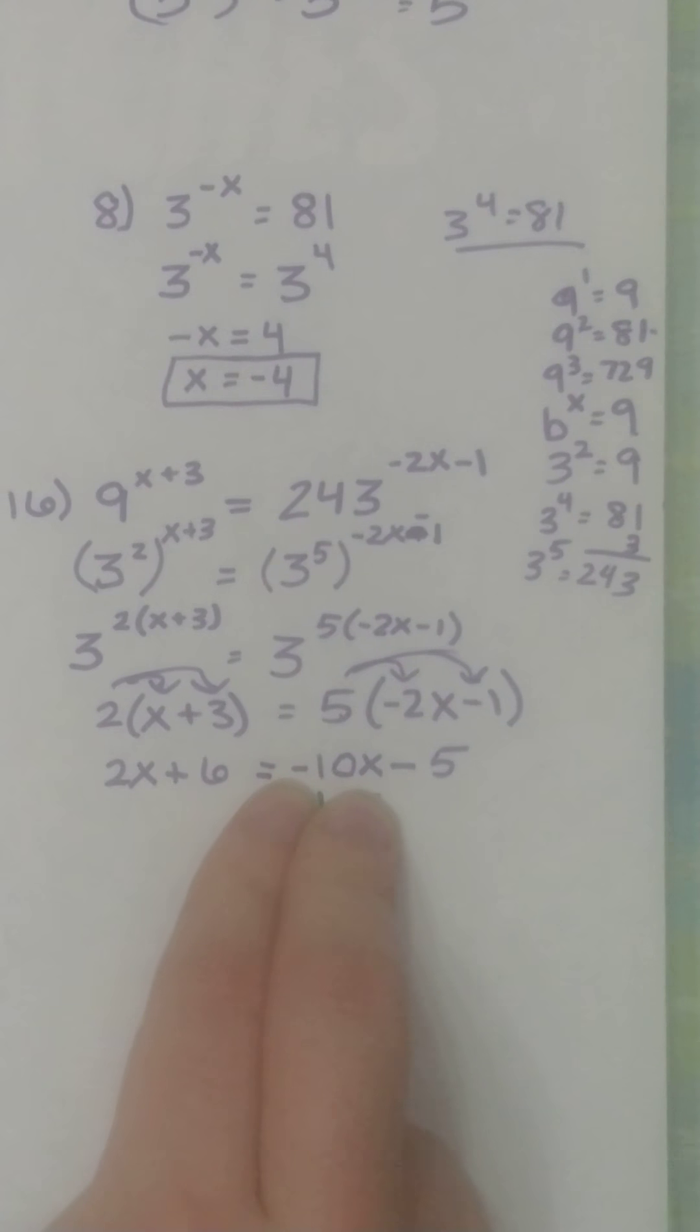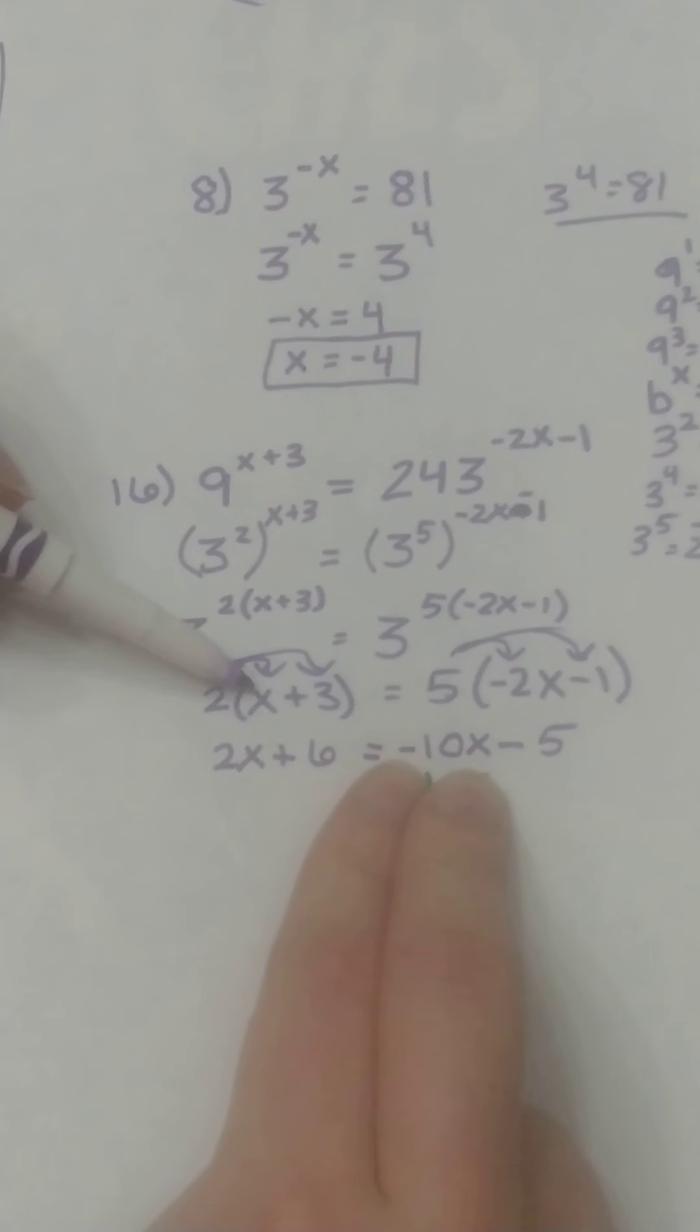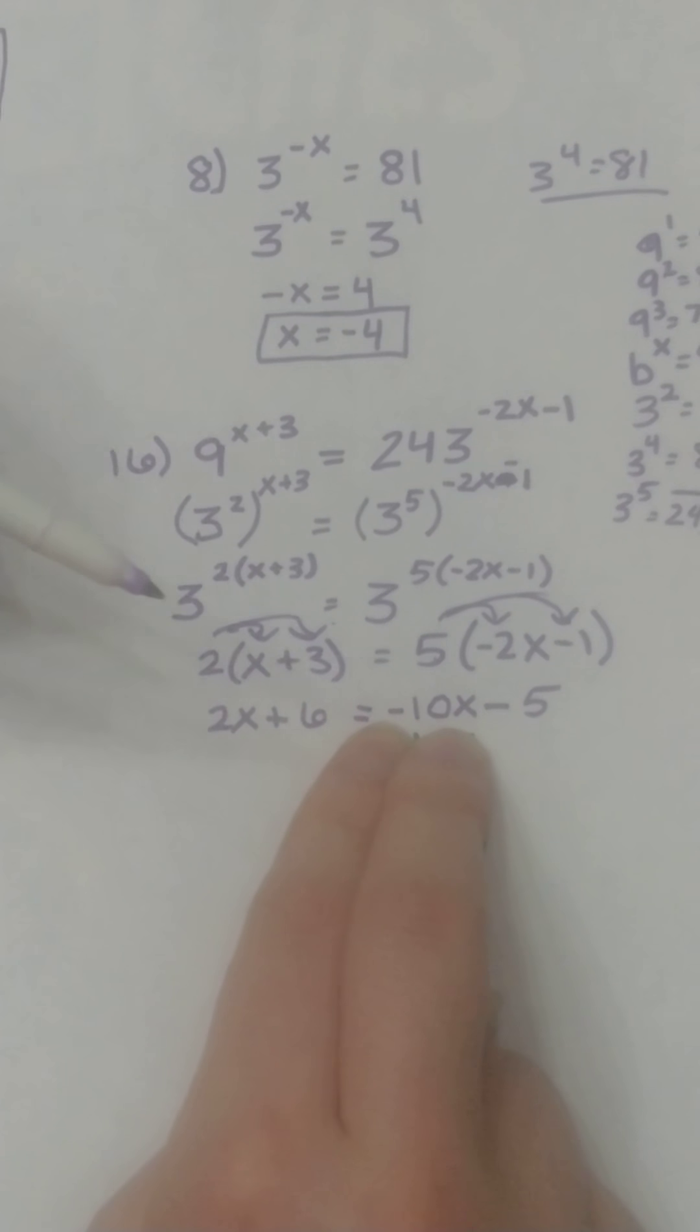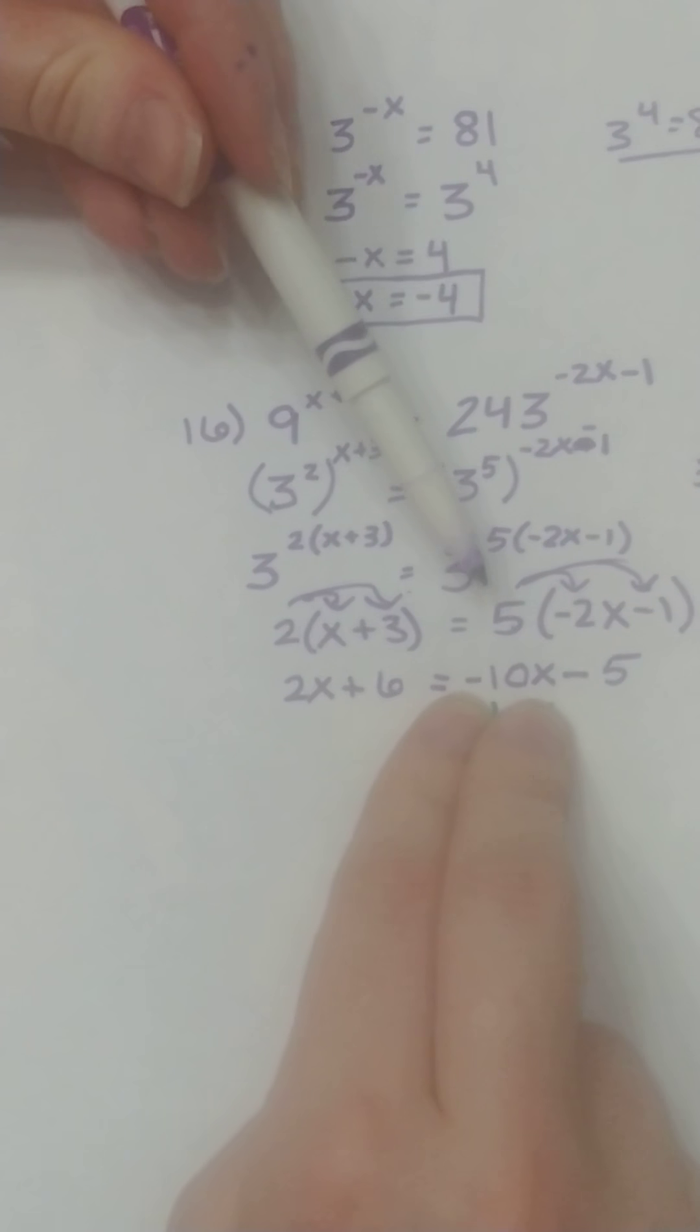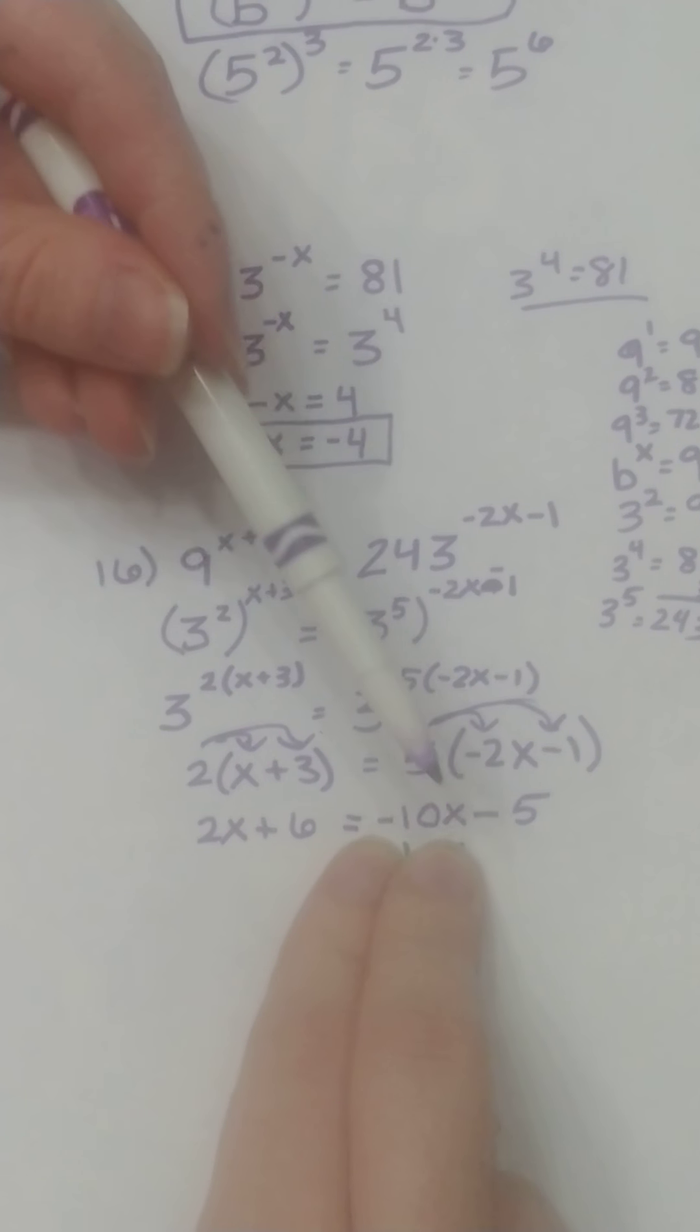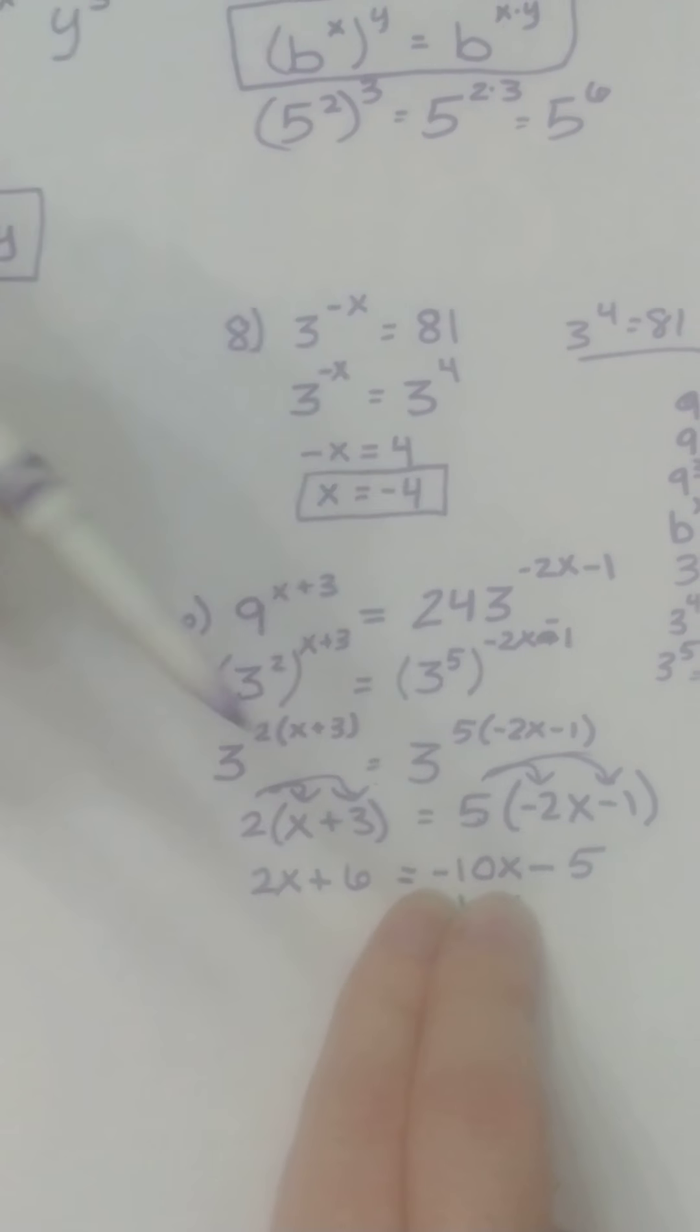So 2 times x is 2x plus 2 times 3 is 6, and then on this side 5 times negative 2x is negative 10x minus 5 times 1 is 5.